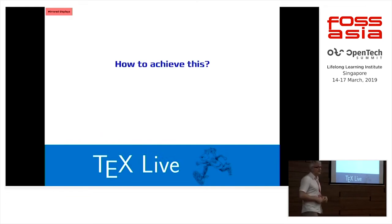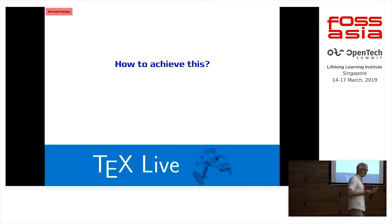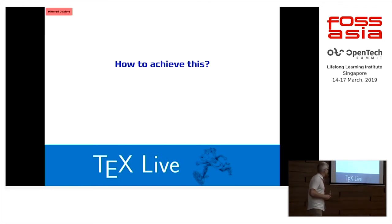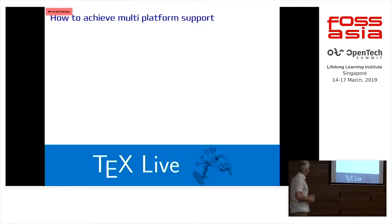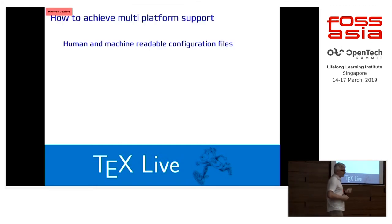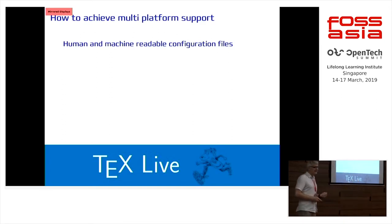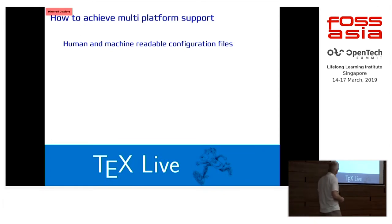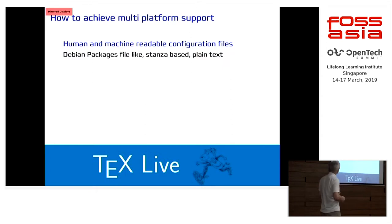So how do we achieve this? Today I want to pick up three things, because these are the lessons we have learned over time — what enabled us to become this multi-platform. The first is human and machine-readable configuration data. The "and" is important: not just machine-readable, but both. It's both useful.